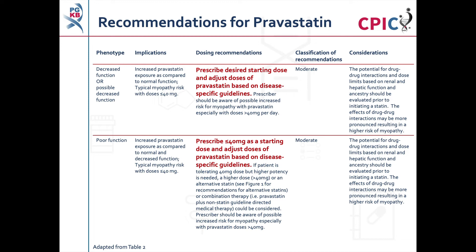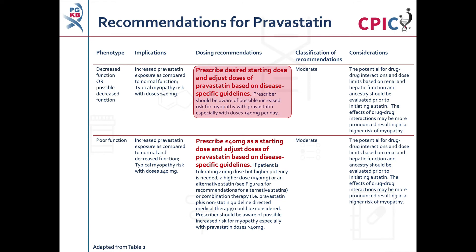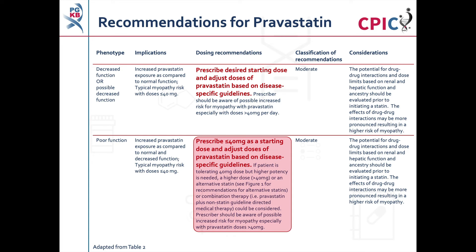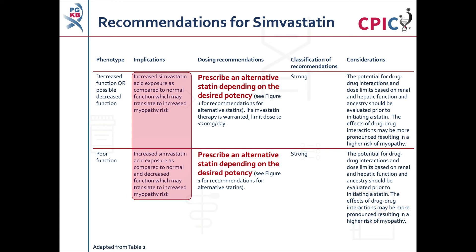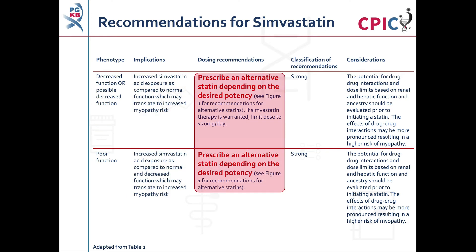These are the CPIC recommendations specifically for pravastatin. Patients with decreased or possible decreased function may have an increased risk of myopathy; these patients should be prescribed a starting dose of no more than 40mg. These are moderate recommendations. For simvastatin, patients with decreased, possible decreased, or poor function may have an increased risk of myopathy; these patients should be prescribed an alternative statin. These are strong recommendations.